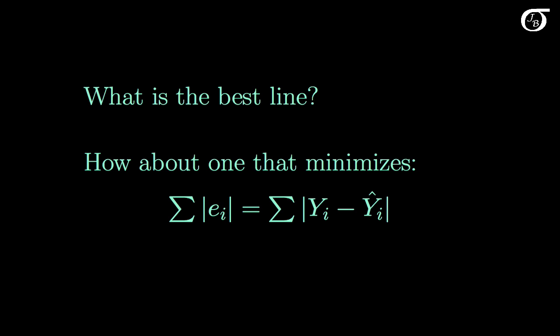How about one that minimizes the sum of the absolute value of the residuals? Or in other words, one that minimizes the sum of the total vertical distances between the points and the line? Well that might seem like a reasonable choice, and it actually is a reasonable choice, and it's one that's sometimes used in statistics, but it is not the one that is commonly used.